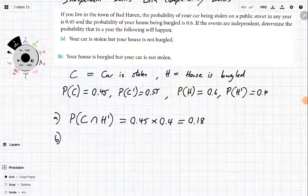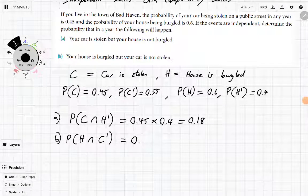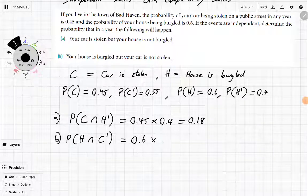So then the second one asks, what's the probability that your house is burgled but your car is not stolen? Well, it's going to be 0.6 for your house getting burgled and 0.55 for it not getting stolen, which is 0.33.